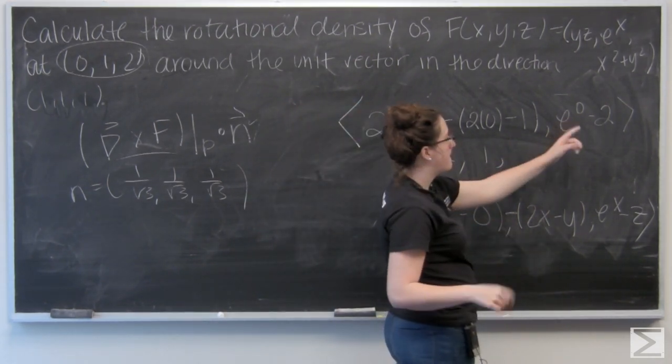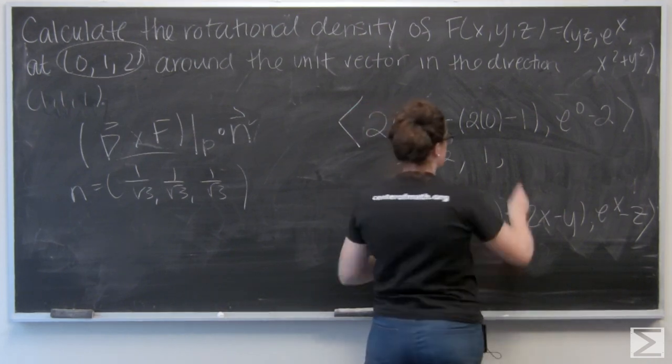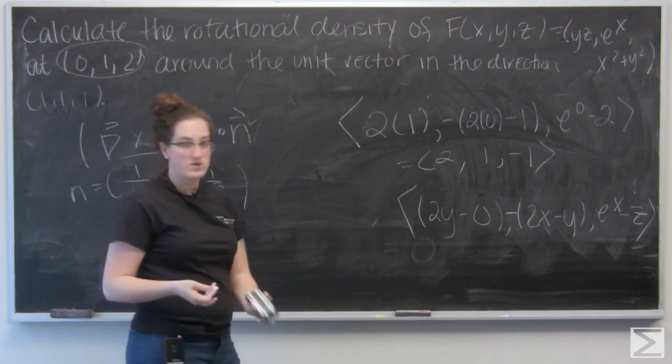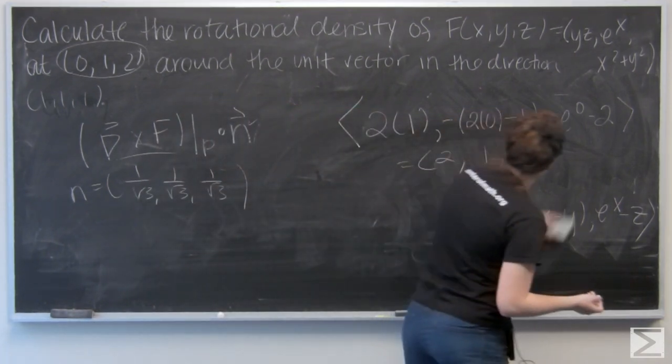And then 1 minus 2, negative 1 for the k component. And now I just need to dot that with the normal vector I got. So let's go ahead and do that.